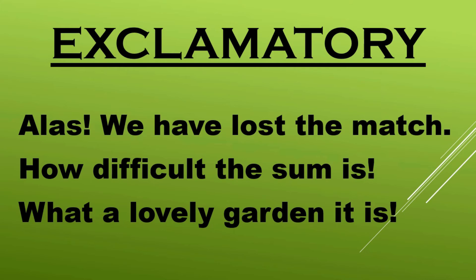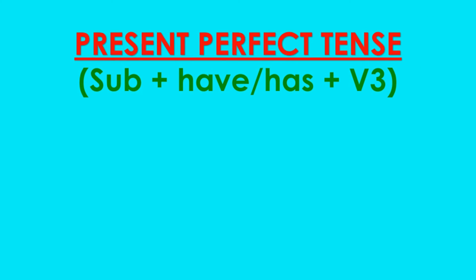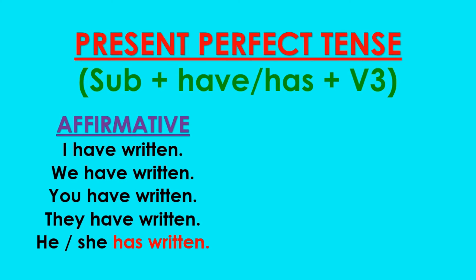Now let me remind you what we mean by the present perfect tense. It is used to describe an action completed in the past but linked with the present, or whose effect continues in the present. The sentence begins with a subject — either a noun or a pronoun — followed by either 'have' or 'has,' and then comes the third form of the verb.